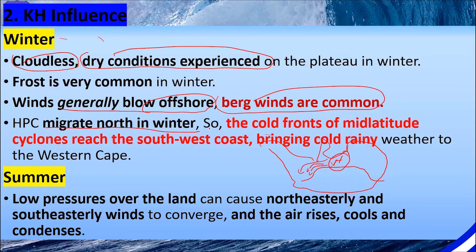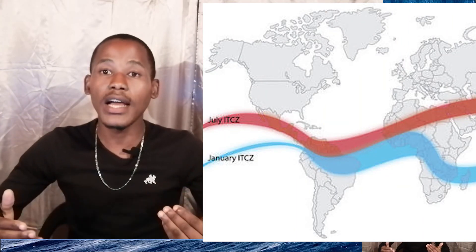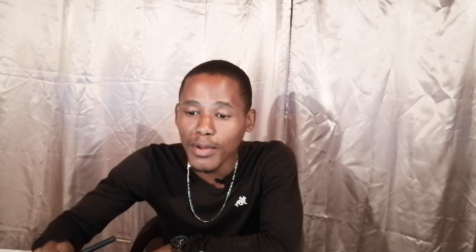The high pressure cell moves northward in winter, hence the cold fronts of mid-latitude cyclones reach the southwest coast, bringing cold and rainy conditions to the Western Cape. This is related to what we know from grade 11: the ITCZ in summer moves towards the southern hemisphere and in winter moves towards the northern hemisphere. Similarly, mid-latitude cyclones in summer move towards the southern hemisphere, and in winter they move upwards towards the northern hemisphere.